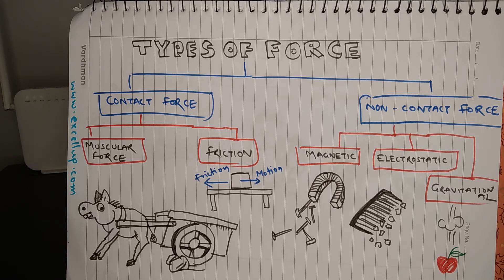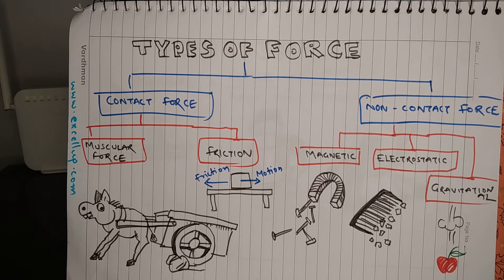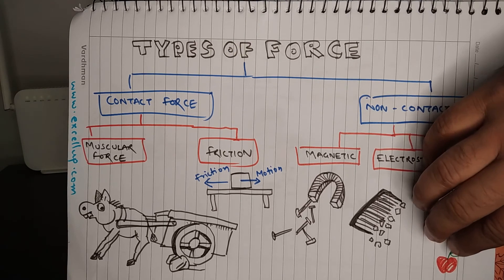Gravitational force is the force of attraction between all objects in the universe. When something is thrown up in the air, it falls back down to the earth because of the gravitational force of the earth. This is all about contact forces and non-contact forces.